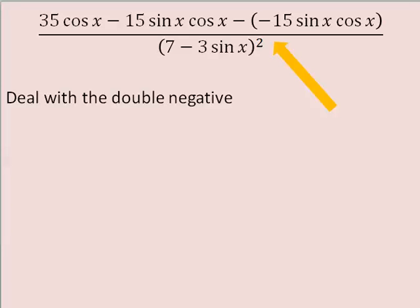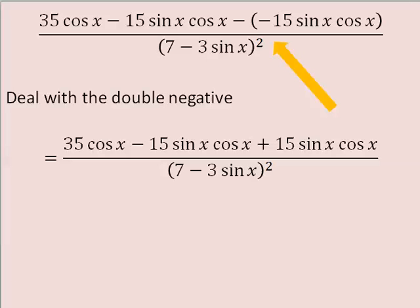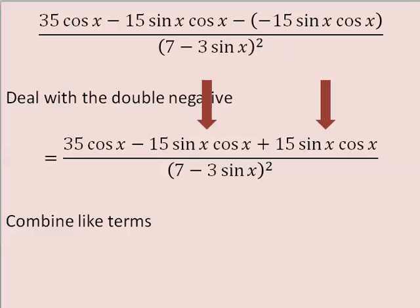Next, let's deal with the double negative. Subtracting a negative means you add. Combine like terms. Negative 15 sine x cosine x plus positive 15 sine x cosine x is equal to 0.